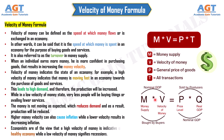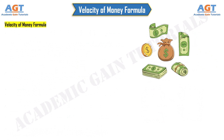Economists are of the view that a high velocity of money is indicative of a healthy economy, while a low velocity of money signifies recessions. The velocity of money formula can be expressed as V equals PQ divided by M.